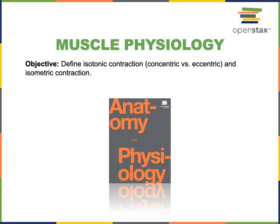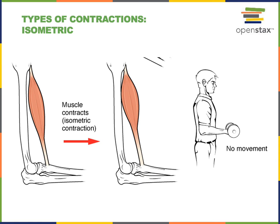In this video we will define isotonic contraction and isometric contraction, and discuss two subtypes of isotonic contraction: concentric isotonic contraction and eccentric isotonic contraction. During isometric contraction, muscle tension increases with contraction but the muscle length remains constant. This occurs when contraction is unable to produce enough force to overcome the load.